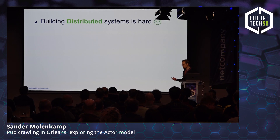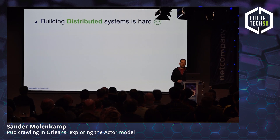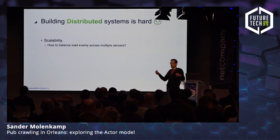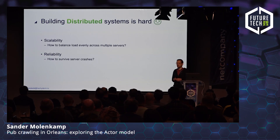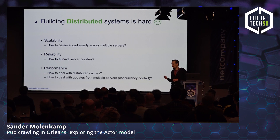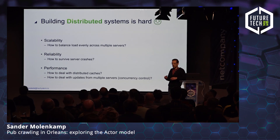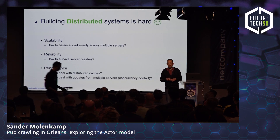Building distributed systems is actually kind of hard. One of the big things is we need to be able to scale out, and more importantly, distribute the load evenly across those scaled-out servers — we don't want any bottlenecks. When running on multiple machines, one of them will probably die, so we have to deal with reliability. Scaling out a compute-intensive task is not that difficult — you just add more CPU cores. But the bottleneck in these applications is often the storage layer.